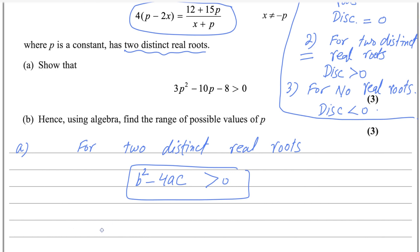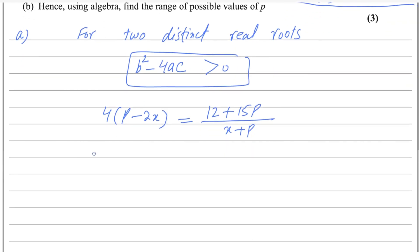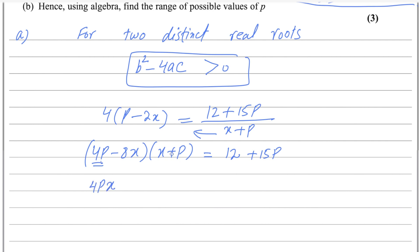Let me start simplifying. We can write 4 into (p minus 2x) equals 12 plus 15p over (x plus p). Expanding the bracket and multiplying both sides by (x plus p) gives: 4p minus 8x, multiplied by (x plus p), equals 12 plus 15p. Expanding: 4px plus 4p squared minus 8x squared minus 8xp equals 12 plus 15p.